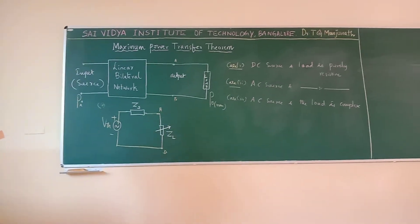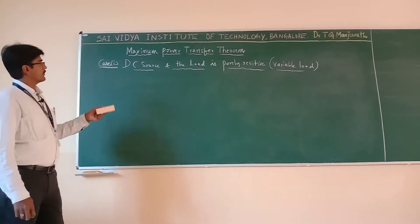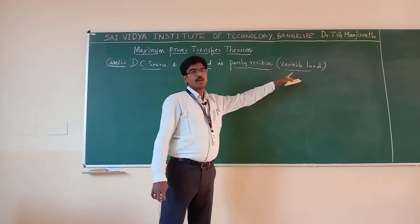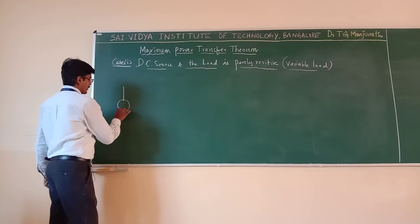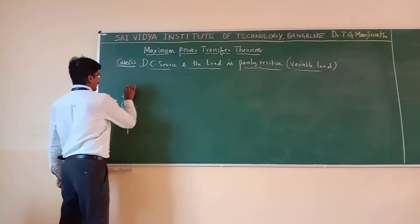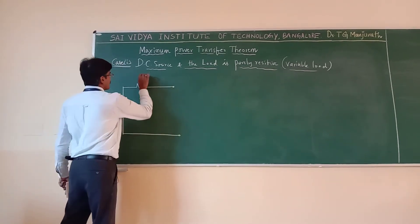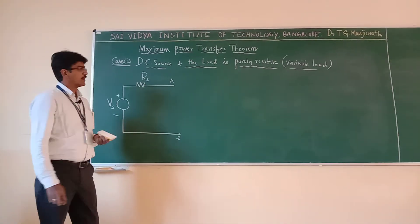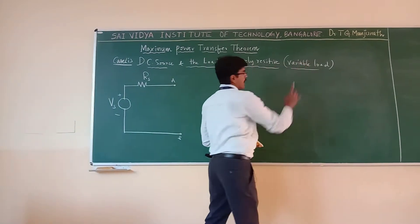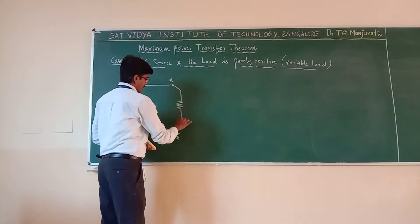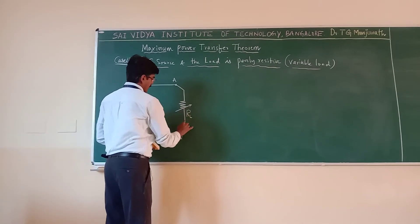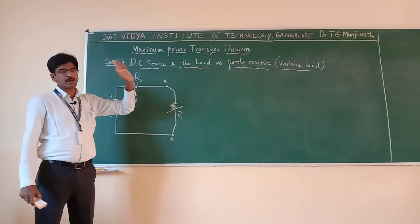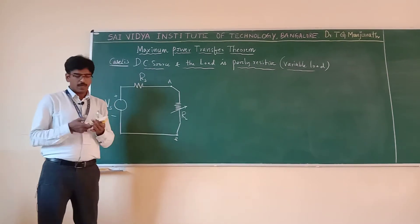Let us take the first case. I am going to consider a DC source with a purely resistive variable load. A DC source is represented as a voltage source V_S in series with a source resistance R_S — this is the internal resistance. The load terminals are A and B. We consider a purely resistive variable load R_L connected across those terminals. Our aim is to obtain the condition for maximum power transfer when the source is DC and the load is purely resistive.